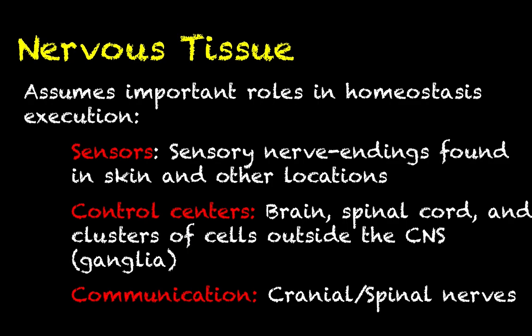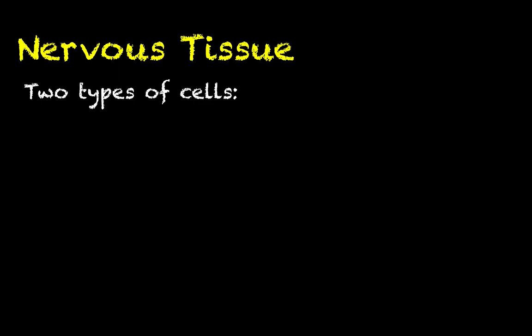As far as the communication that goes between the sensors and the control centers, and then the control centers and the effectors, cranial and spinal nerves are big bundles of the axons of these sensory and motor neurons that are sending the afferent and efferent signals back and forth through the negative feedback system.